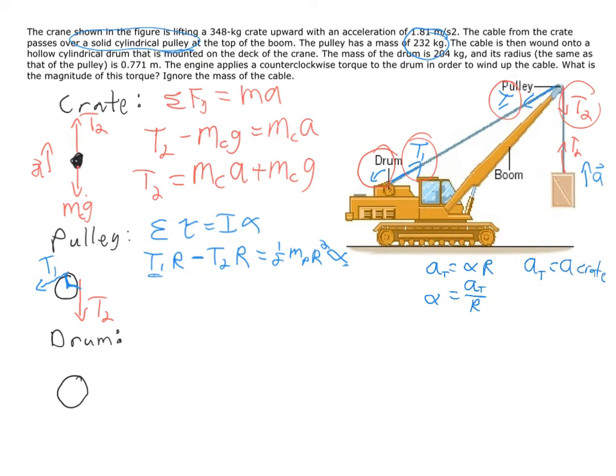So we can actually plug in the crate's acceleration—the same A from up here is going to be the A in our equation alpha equals A over R—so we can pop this in over here as well.